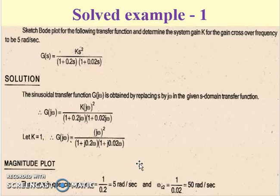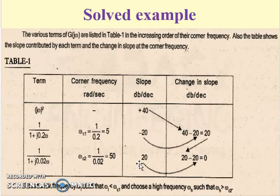To begin with the magnitude plot, firstly we analyze the three terms: the derivative term (j omega)², and two first order terms in the denominator. This derivative term (j omega)² does not have any corner frequency and contributes a slope of +40 dB per decade. Since the term is (j omega)², it contributes +20 times 2, which equals +40. Since it is the first term, we will have this as the change in slope.